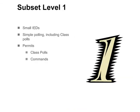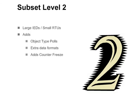Subset level 1 is designed for small IEDs. It uses simple polling, including class polls, which will be described later. Subset level 2 was designed for large IEDs or small RTUs. It adds object-type polls, extra data formats, and other useful features such as counter-freeze operations.